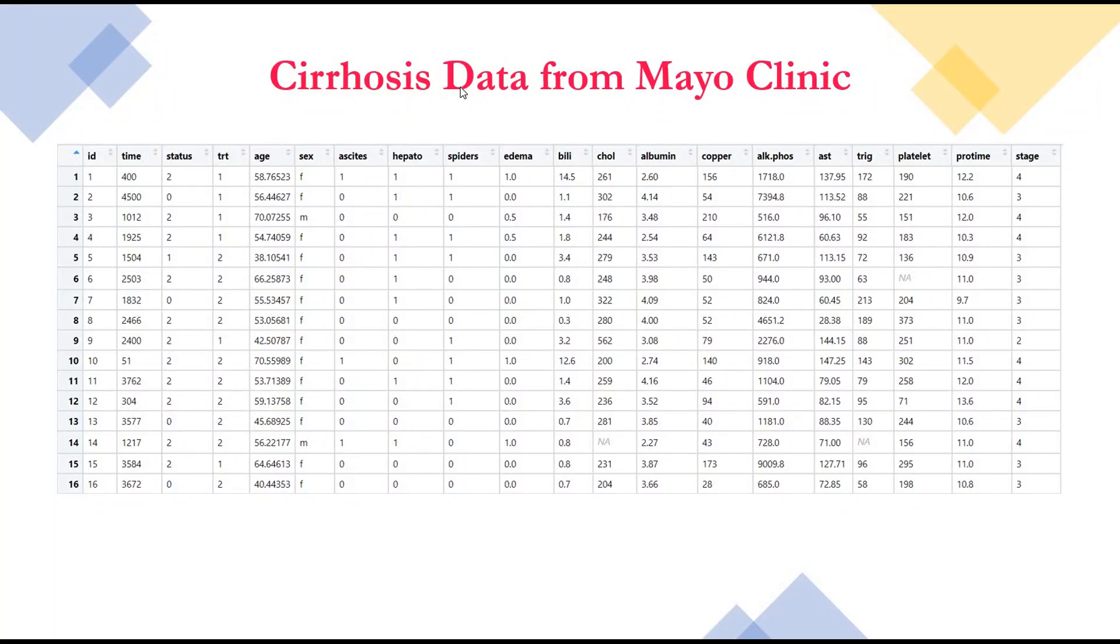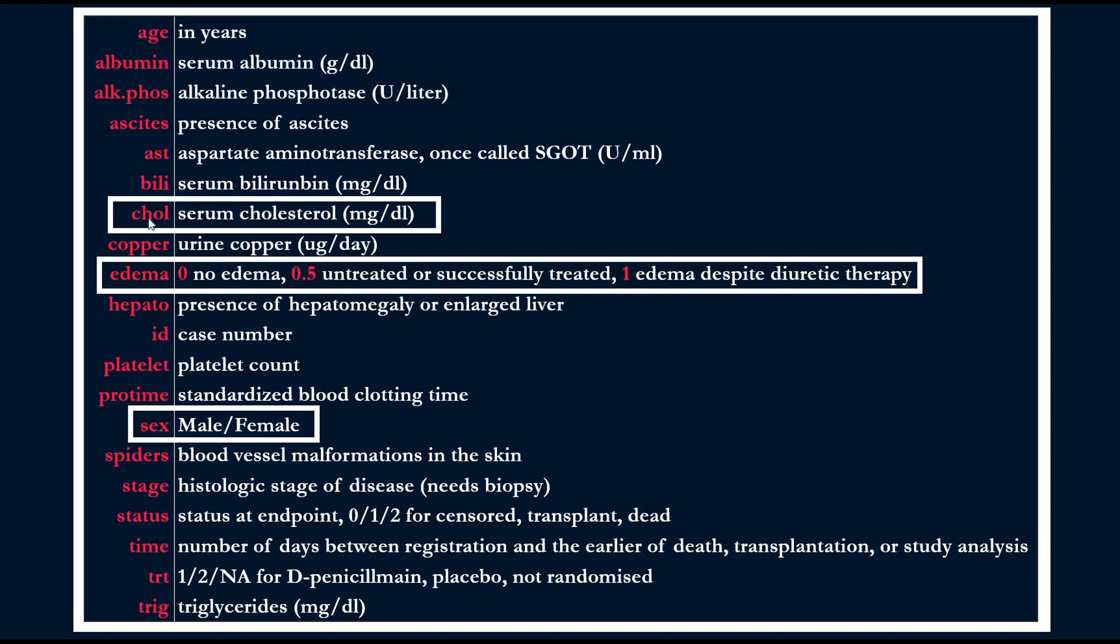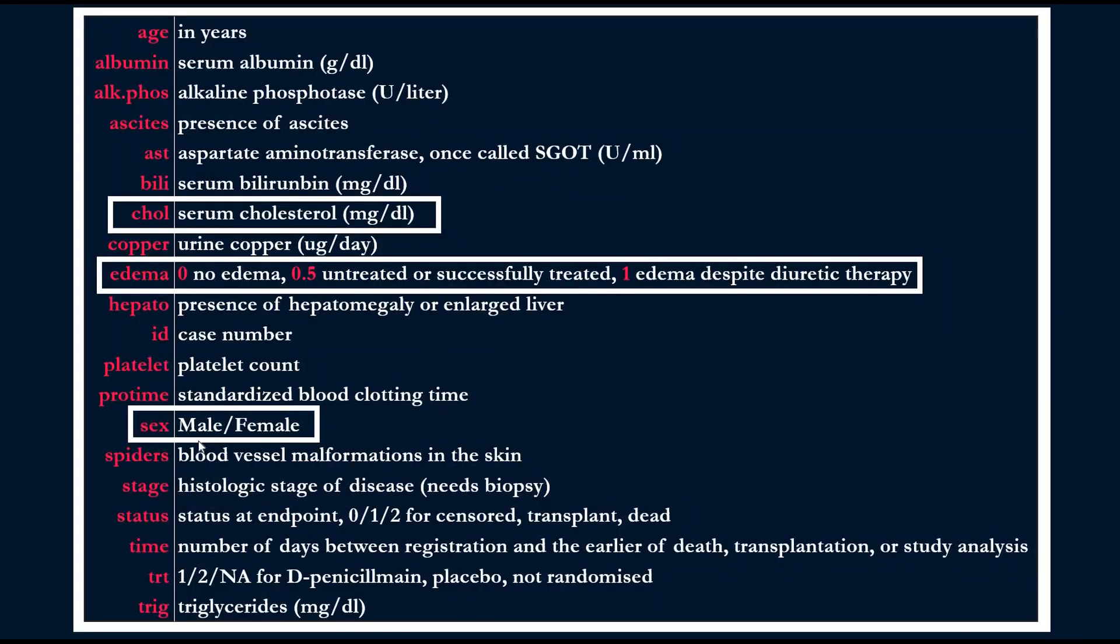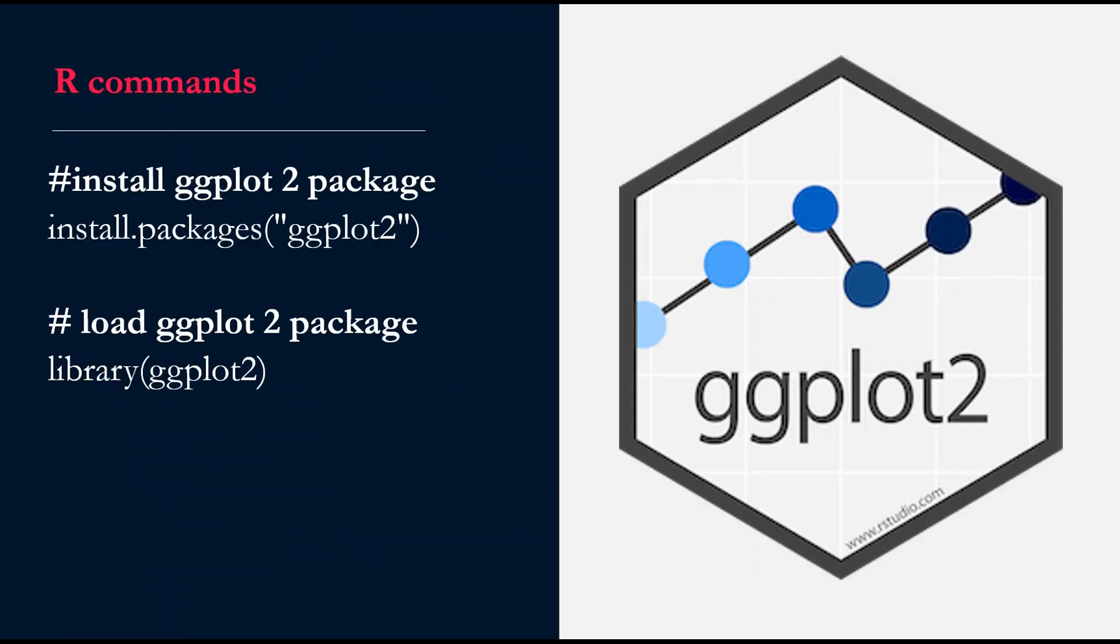We are going to use cirrhosis data from Mayo Clinic. Each column here represents a variable. Today we are going to use cholesterol as a continuous variable and edema as a discrete variable. Here it's discrete because it's 0, 0.5, and 1 - it's restricted. But cholesterol, if we go back here, is not restricted. It can be 200, it can be 231, it can be 204. Also we will use male and female.